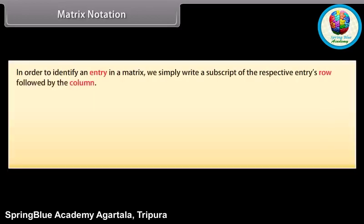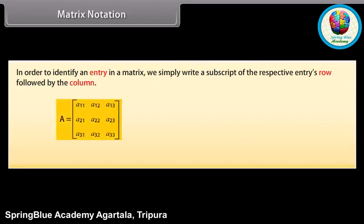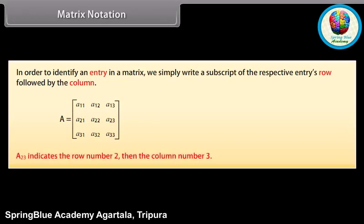Matrix notation. In order to identify an entry in a matrix, we simply write a subscript of the respective entry's row followed by the column. In matrix A, we write A₂₃ to denote the entry in the second row and the third column. A₂₃ indicates row number 2 and column number 3.